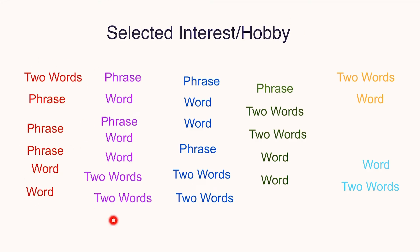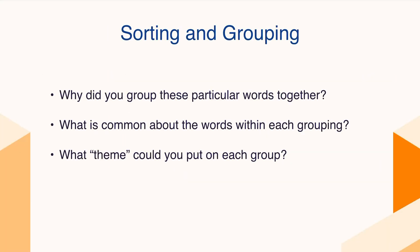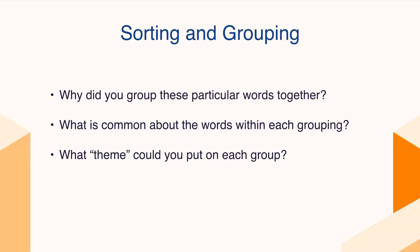Now that you've done that, you have your selected hobby and everything grouped into like items. Maybe a couple of things are off to the side that don't fit — that's okay. We're just trying to get groupings of ideas together. Now think about why you grouped these things together. What was common about the words within each grouping? What theme could you put to it? Is it all about movement? Gameplay? Put a theme on each grouping of words.